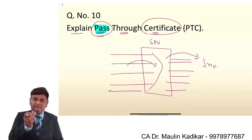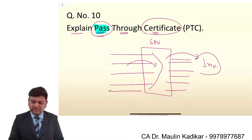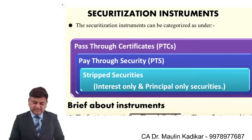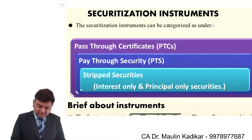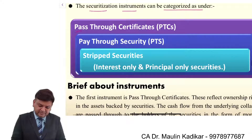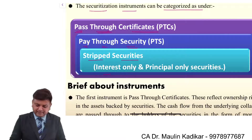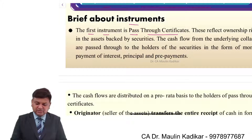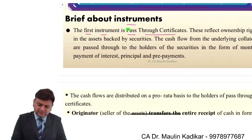Certificates will be issued and whatever amount is issued by the special purpose vehicle will be proportionately distributed to the investors. Securitization instruments can be categorized as: pass-through certificate, pay-through security, and strip security — interest only and principal only securities. The first instrument is the pass-through certificate.